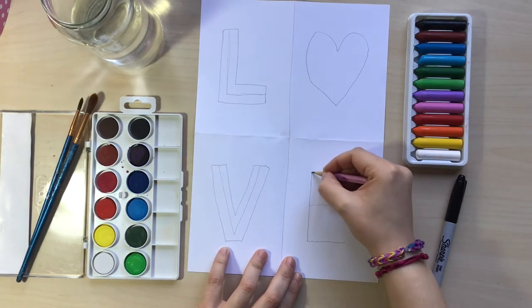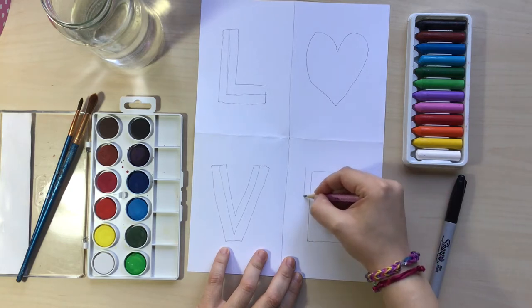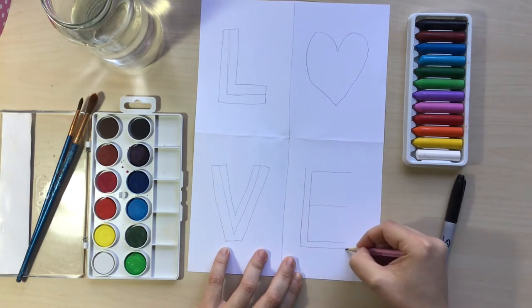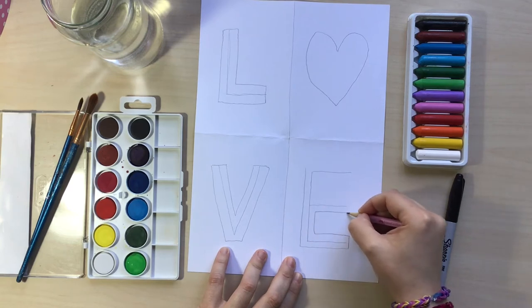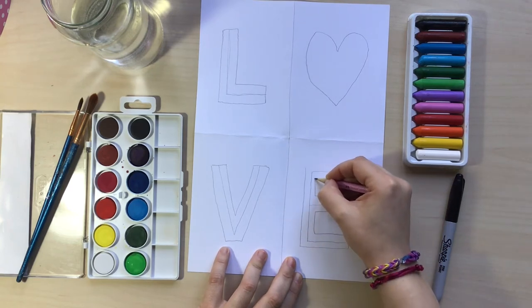And last but not least, I'm going to draw letter E. And once I'm done drawing it, I'm going to make it into a block letter by going around those lines I just made.